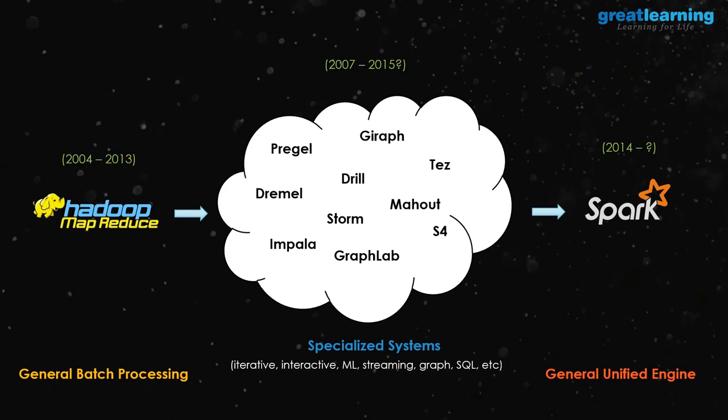Spark supports streaming and can manage most of these cases. The graph processing tools like Pregel and GraphX predecessors are gone — Spark handles that now. Mahout is mostly gone too. There is a tool called Tez, which sits between MapReduce and Spark and makes MapReduce faster, but since Spark is even faster, Tez will likely be gone in a couple of years. Hortonworks is the company promoting Tez, so they may keep it for market share.